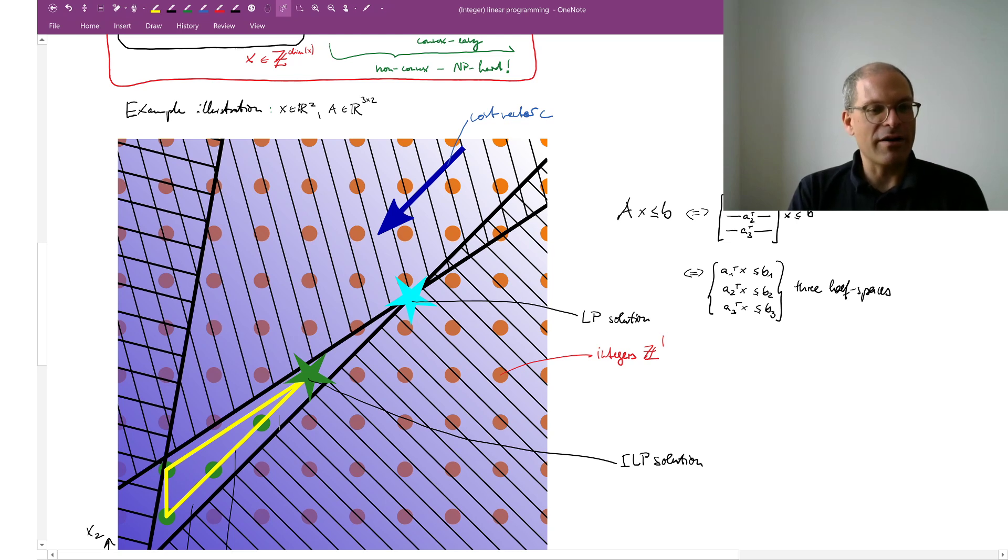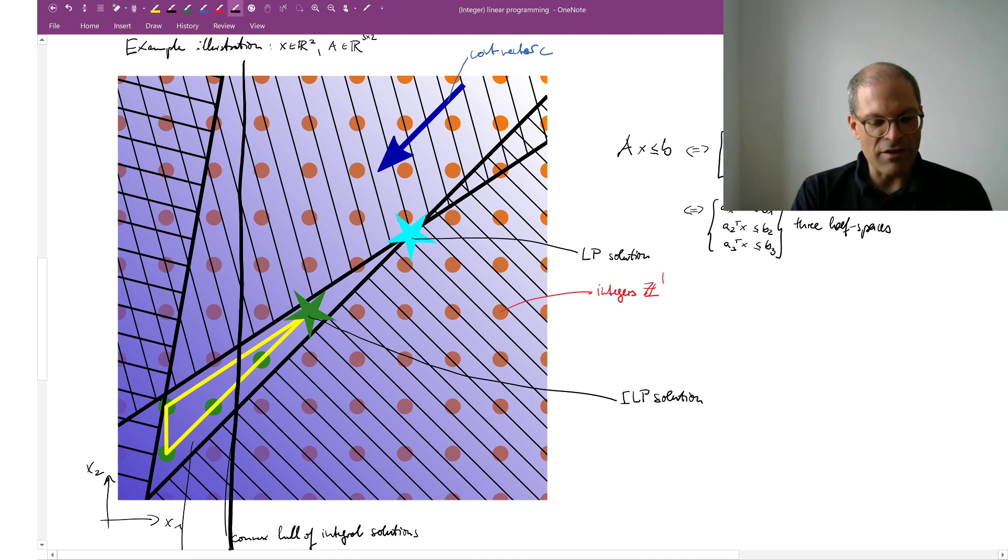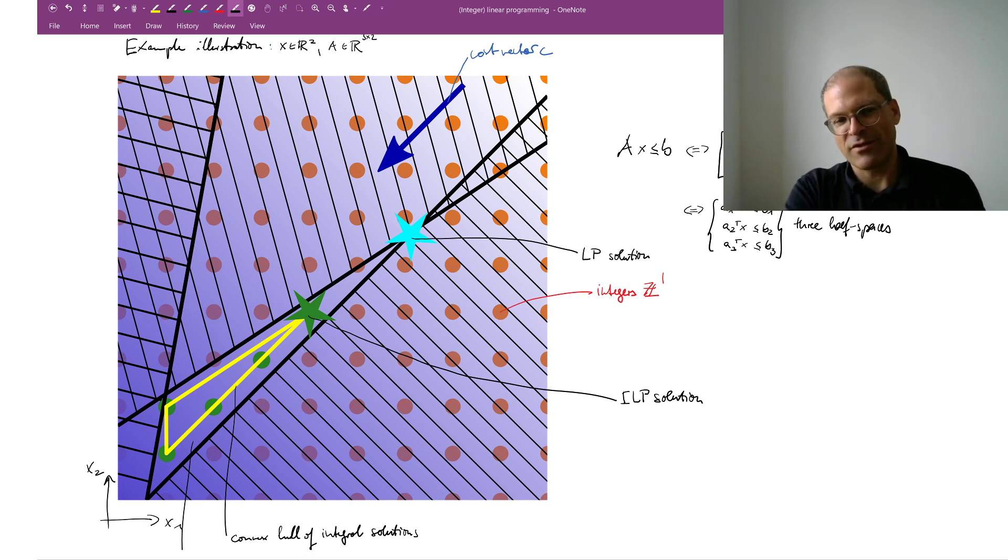I don't completely need to try them out one by one. I can use so-called branch and bound methods. For example, these integer points I could split them here into two halves, the ones to the right of this line and the ones to the left of the line. Then if I solve the left linear program, not the integer, just if I solve the left linear program, and if I find that this left linear program which must have a better cost than the best integer linear program, if that is already worse than some integer solution that I found in my other half, then I need no longer study in detail the solutions on the left. So that would be a branch and bound approach.